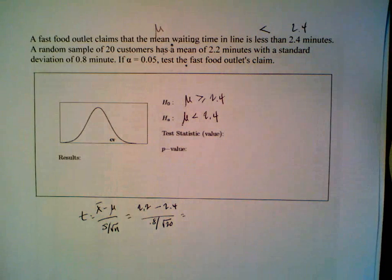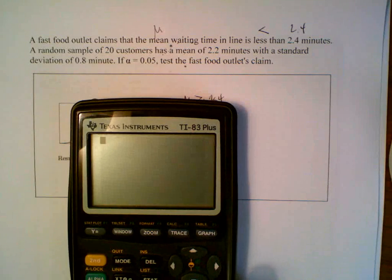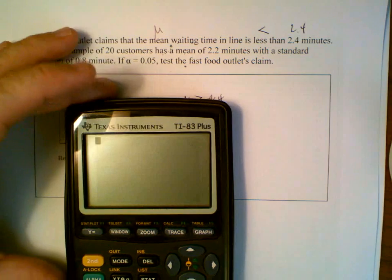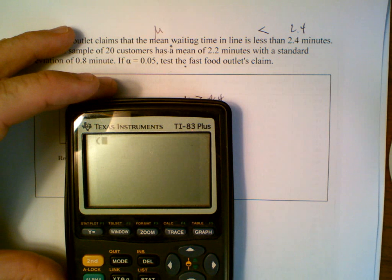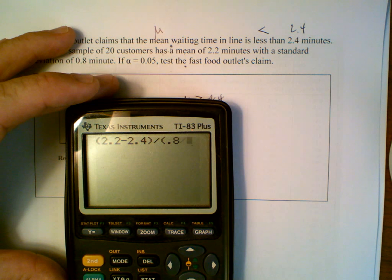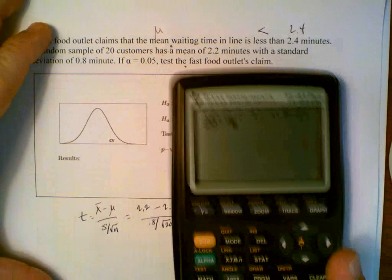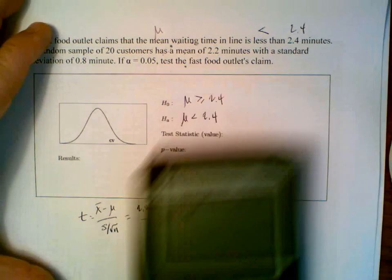And our calculation, which I'll do so you can see how these things go together. 2.2 minus 2.4, divided by 0.8 divided by square root of 20. This is what we had down here.